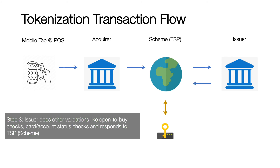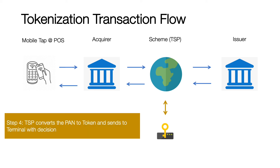The issuer here performs all the remaining validations — account status checks, card status checks, limit checks, etc. — and then sends the decision back to the scheme. Once the scheme receives the decision, it converts the PAN number back to a token number and sends it to the acquirer and then to the POS. There is minimal impact to the acquirer ecosystem, and the TSP does the heavy lifting. The issuer has reduced responsibility in transaction processing, as it does not perform any cryptogram-related validations.